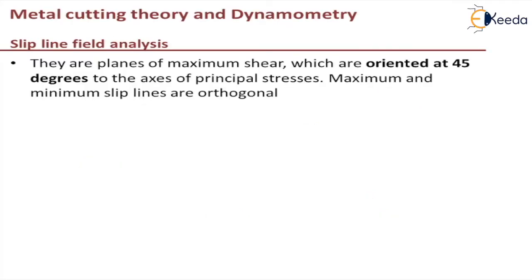The slip lines are the planes of maximum shear — the slip plane is where the shearing will happen, where maximum shear is present. This is oriented at 45 degrees to the axis of principal stresses. The maximum and minimum slip lines are orthogonal and are oriented at 45 and 135 degrees.